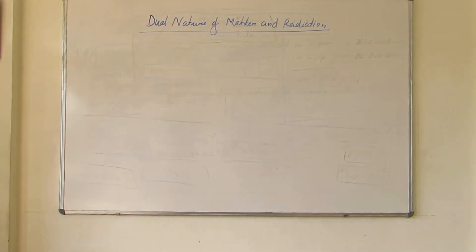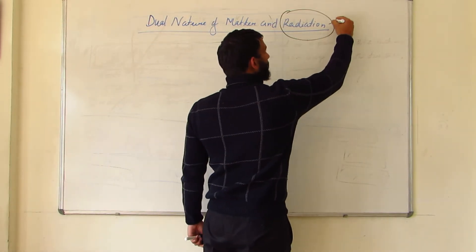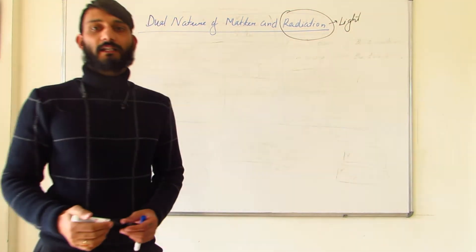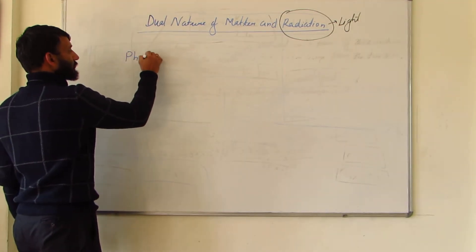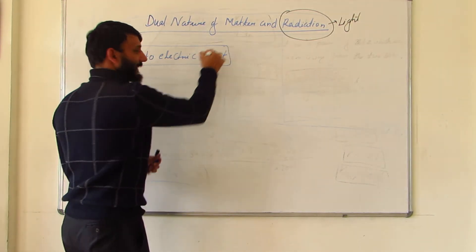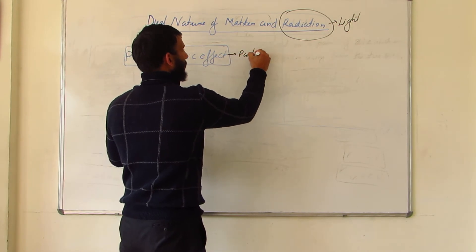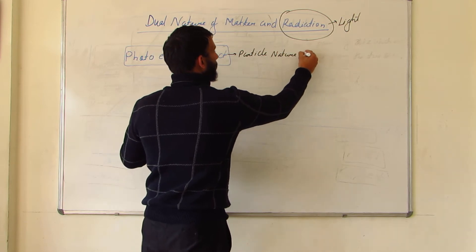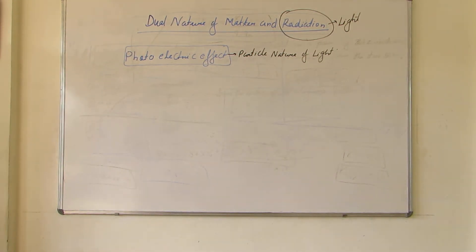Welcome to the class. Today we will start a new unit called 'Dual Nature of Matter and Radiation.' Earlier we studied the wave nature of light — interference and diffraction are explained on the basis of the wave nature of light. In this chapter we will discuss the dual nature of matter as well, but first we will understand a phenomenon called the photoelectric effect, which is explained by the particle nature of light.